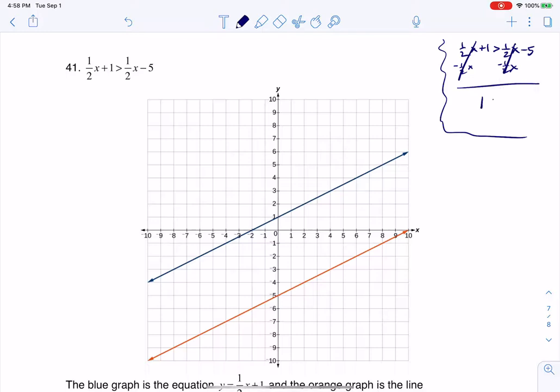This would give me 1 is greater than -5. And I want to point out this is always true. The number 1 is greater than -5. So what this is saying is, since I'm arriving at something that's inherently true, that means no matter what I plug in for these x values here, this inequality will be true.